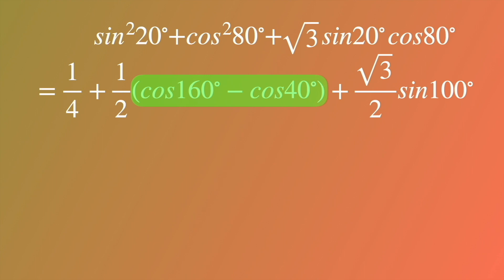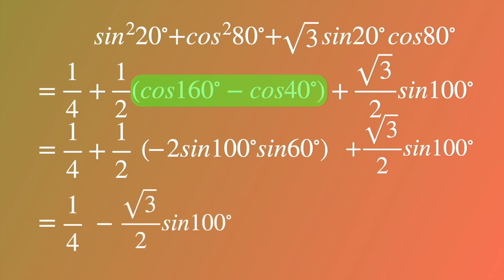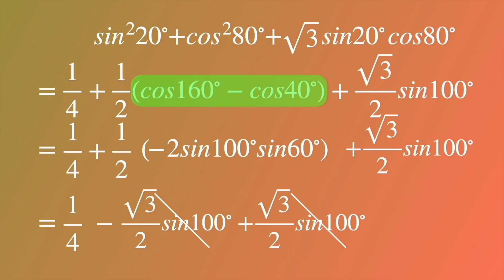The expression can be simplified further. Cosine of 160 degrees minus cosine of 40 degrees, as mentioned in the first method, equals negative 2 times sine of 100 degrees times sine of 60 degrees. Notice that the last two terms cancel out, so the result of the trig expression equals 1 half. That's the right answer. Thank you for watching this video. I will solve other math problems in my next videos. If you are interested in solving math problems, please subscribe to this channel and follow my videos. See you next time, bye-bye.